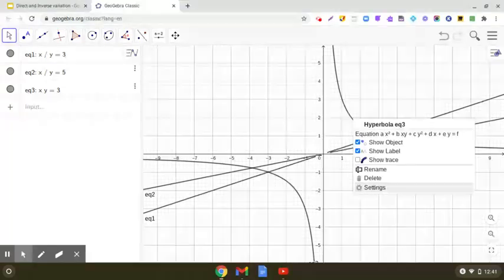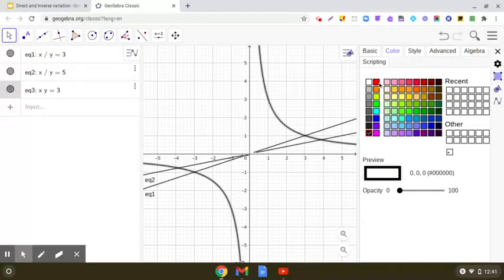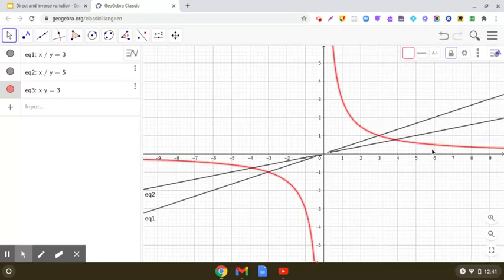Like we got x upon y equals constant as a straight line, when x into y equals a constant, this red curve, which is coming in the first quadrant and the third quadrant, is known as a hyperbola.